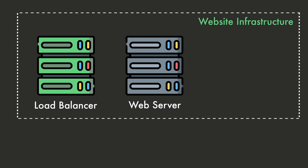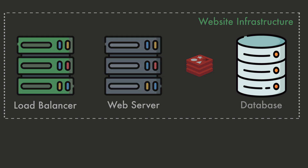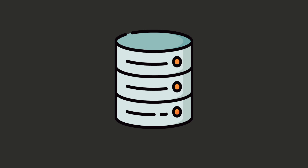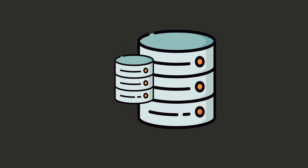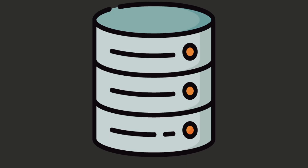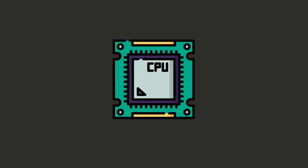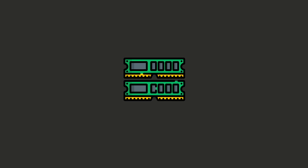If the web server itself is involved, it might use a cache such as Redis to store results of database queries and serve the response to the client without even hitting the database. And if the web server is querying the database, the database itself might have a cache as well. Databases, like your laptop, run on physical hardware. And even at the hardware level, the CPU has a caching mechanism — some data might be cached in RAM rather than stored on the hard drive.